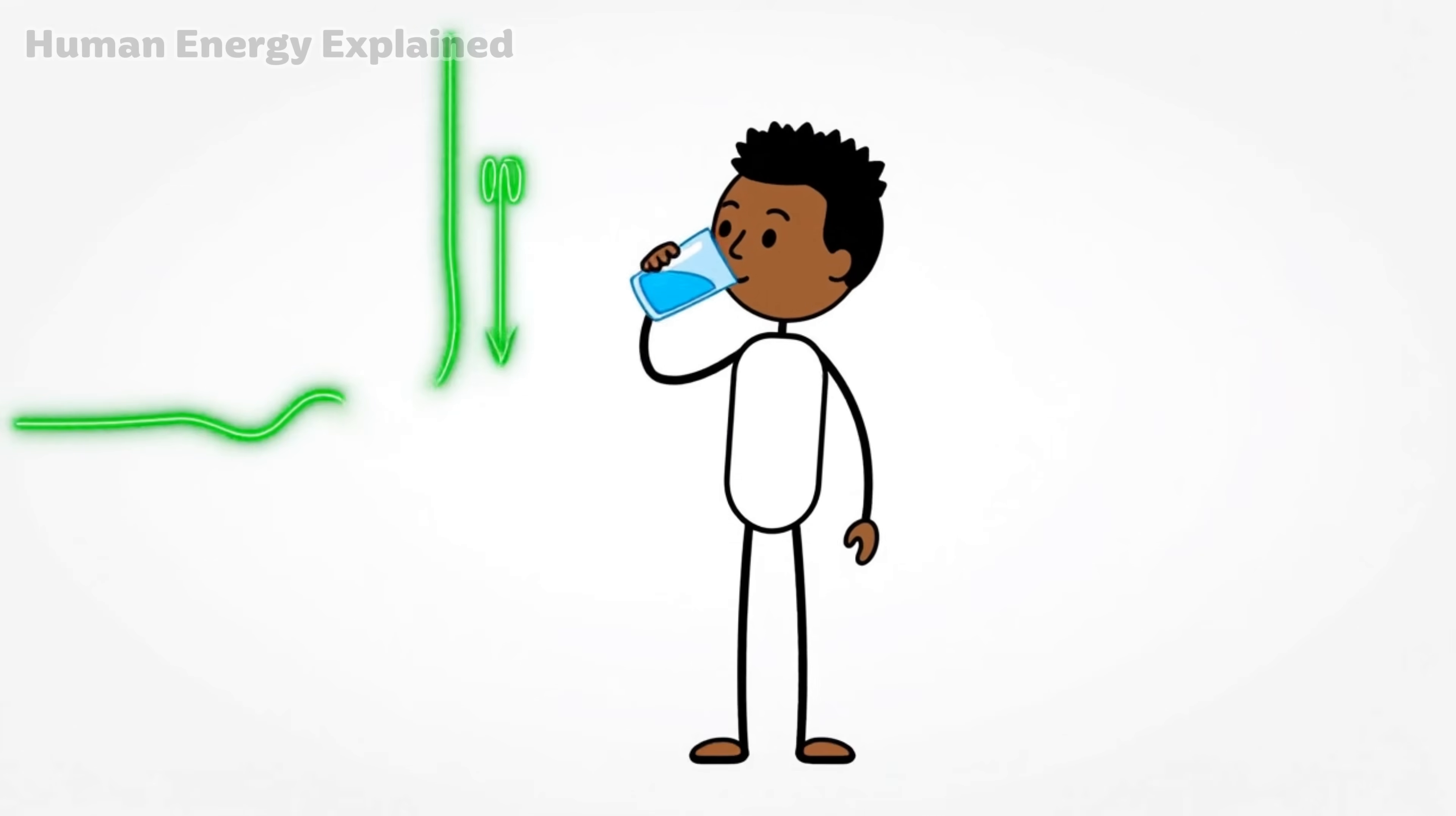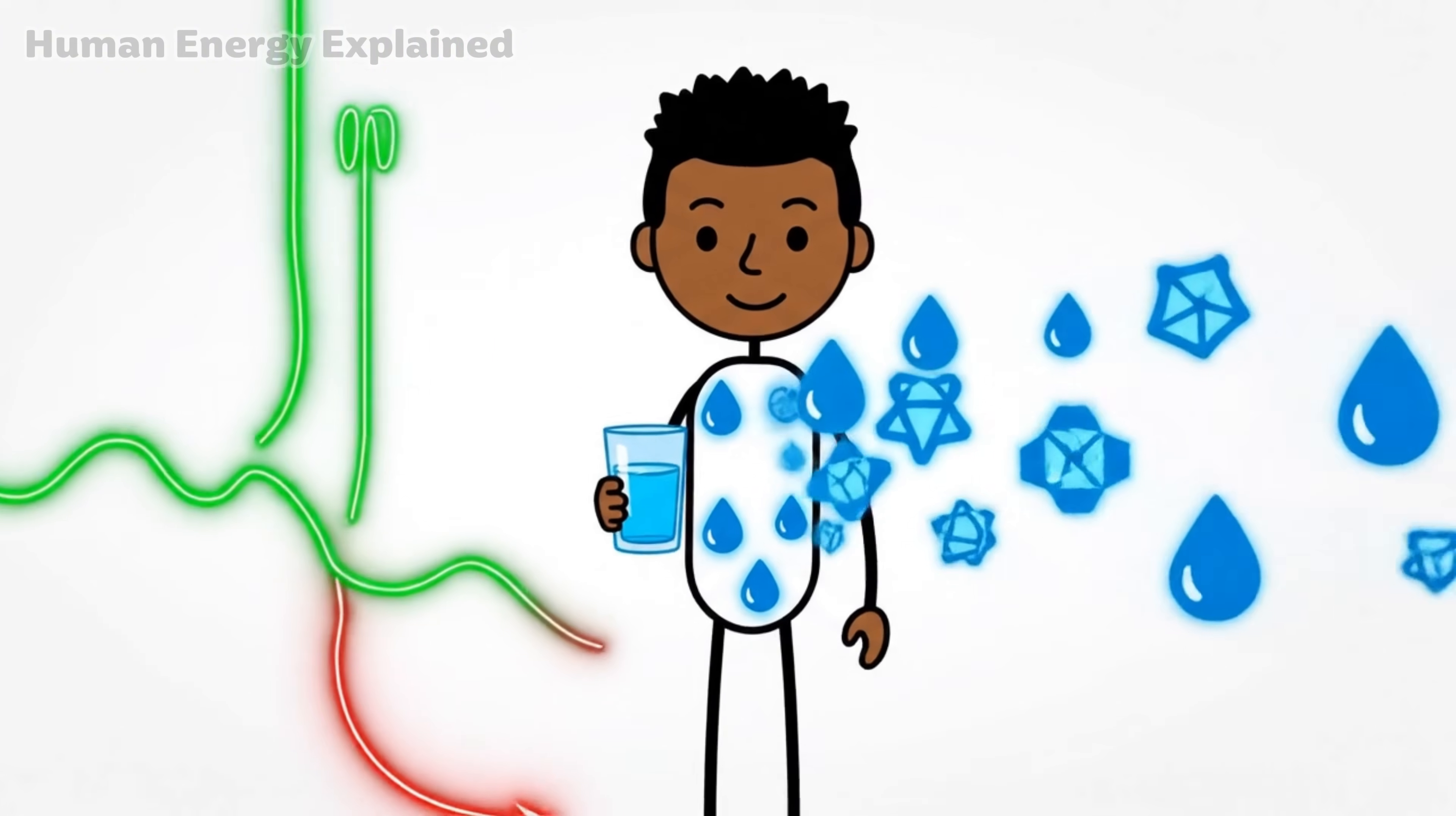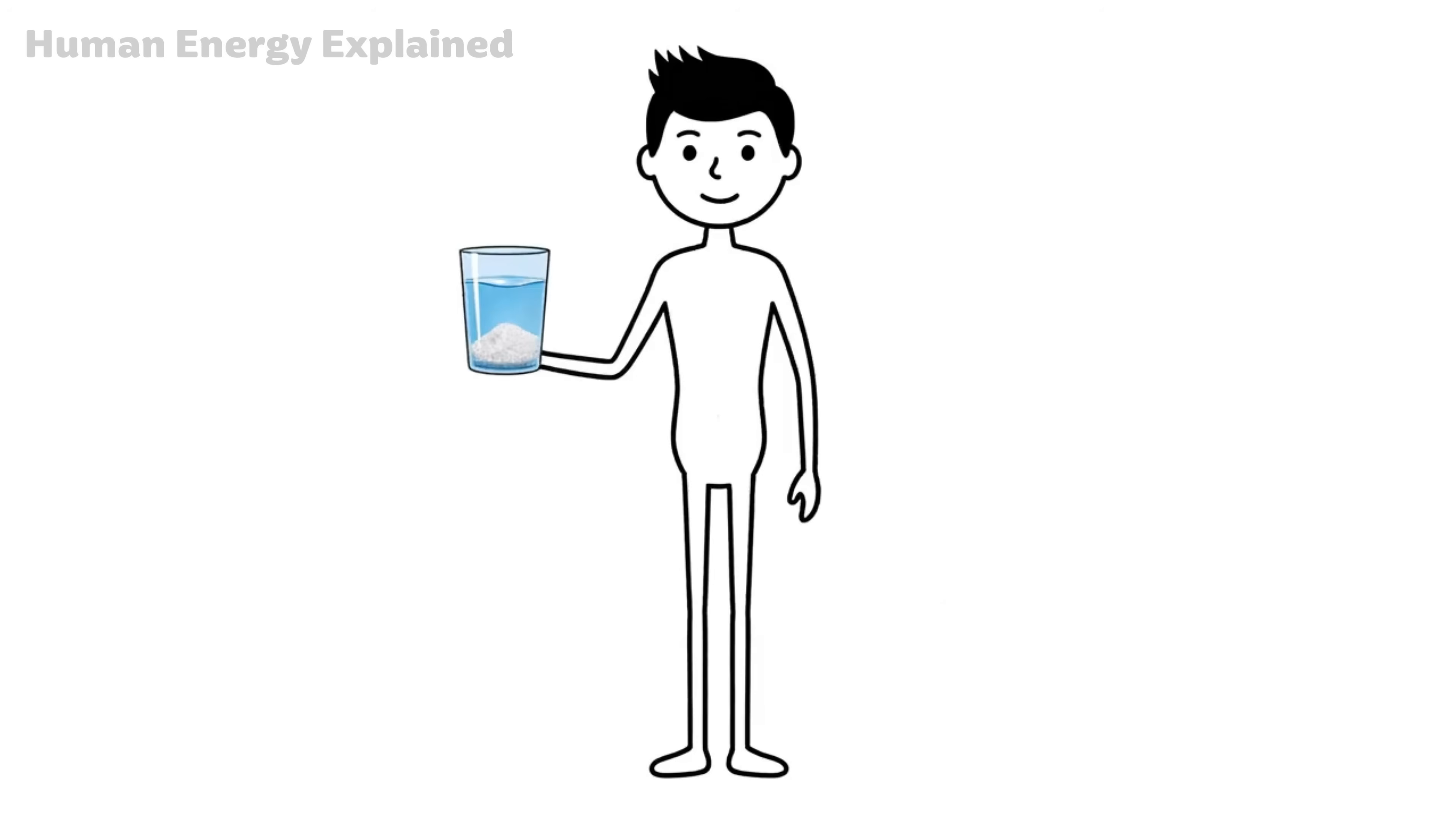Stay hydrated during this phase. As insulin drops, your body releases water and electrolytes. A glass of water with a pinch of salt can make a surprising difference. You're not just fighting hunger, you're supporting a biological transition.